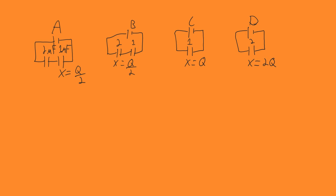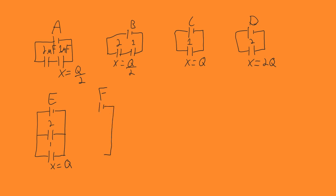Then we move to E, which is two capacitors in parallel: this one has 2 microfarads and this one has 1 microfarad, and we're concerned with the bottom one. Just like before in C, it is going to have a charge of Q because the voltage drop across both is going to be the same, but the charge depends upon the capacitance. For F, it's the same circuit but we are concerned with the other capacitor — the one with capacitance 2. This means it's going to have 2Q across it, because it has the same voltage drop since it's in parallel.